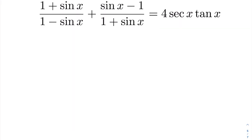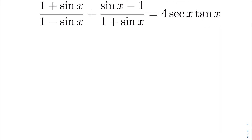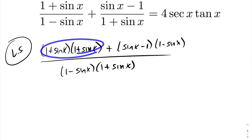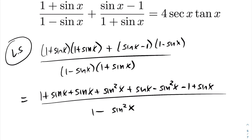In the next example, we want to show the following identity. On the right hand side everything is expressed as one fraction, but on the left it's broken apart — so the first step is to work with the left hand side and get a common denominator. Going ahead and doing that, we get the following expression.